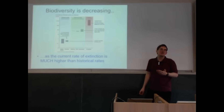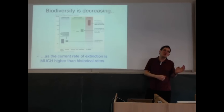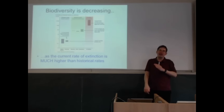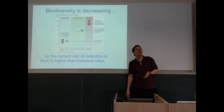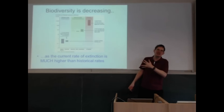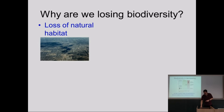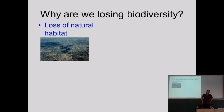There have been various periods of great extinctions in the past — for example, when the dinosaurs went extinct due to some sort of cataclysmic event like an asteroid hitting. We think that what we have currently is basically humans being the equivalent of an asteroid hitting the system. So why are we losing biodiversity? The main reason is the loss of natural habitat.